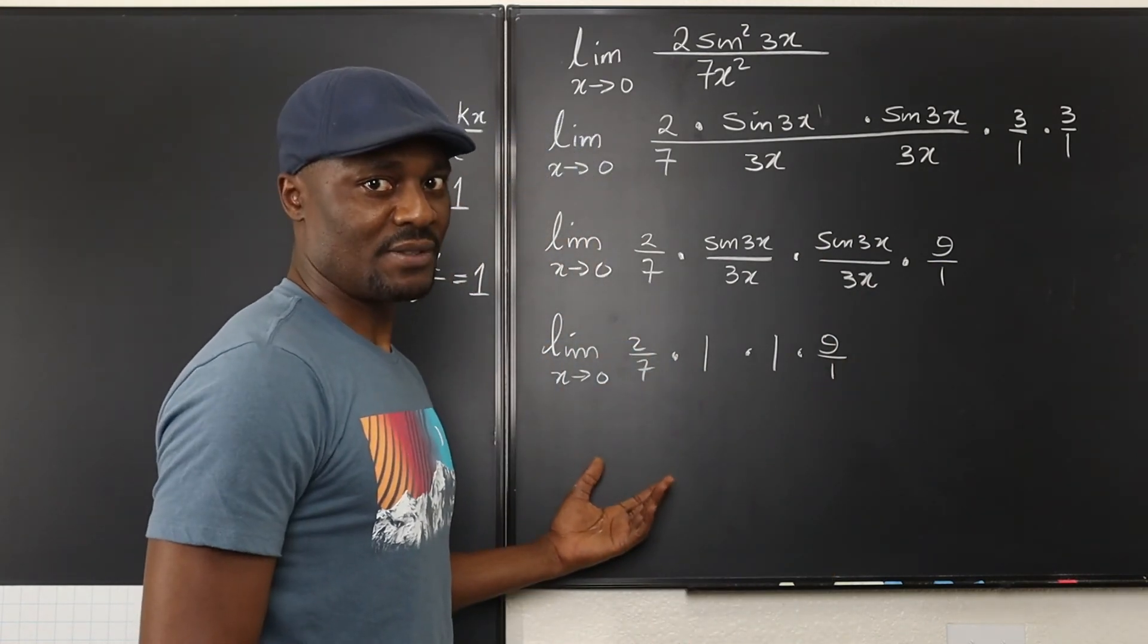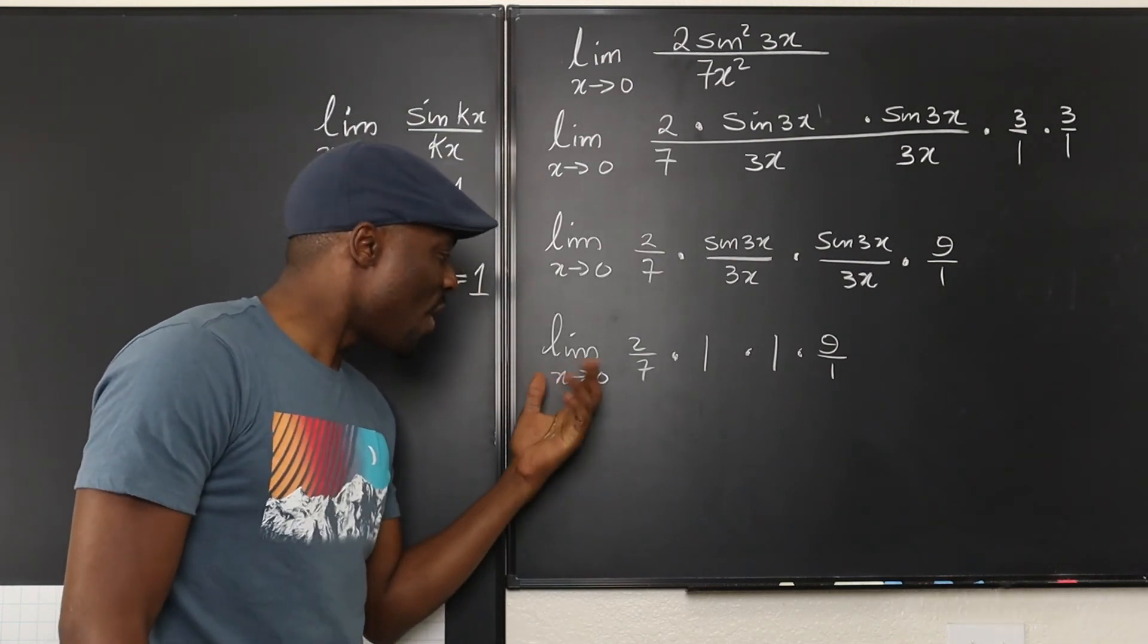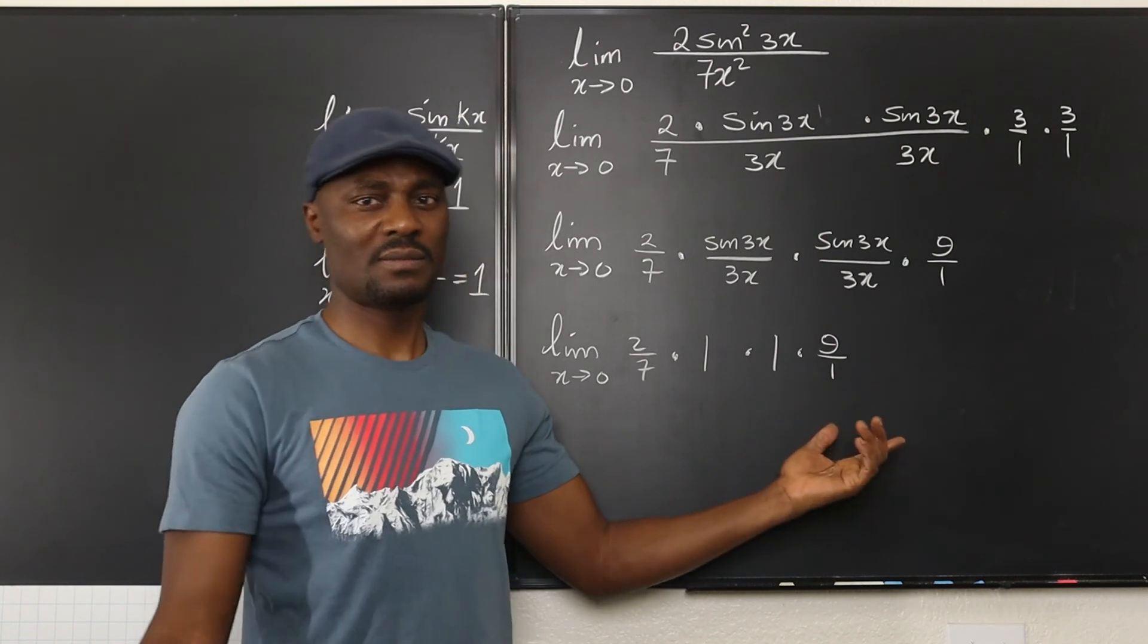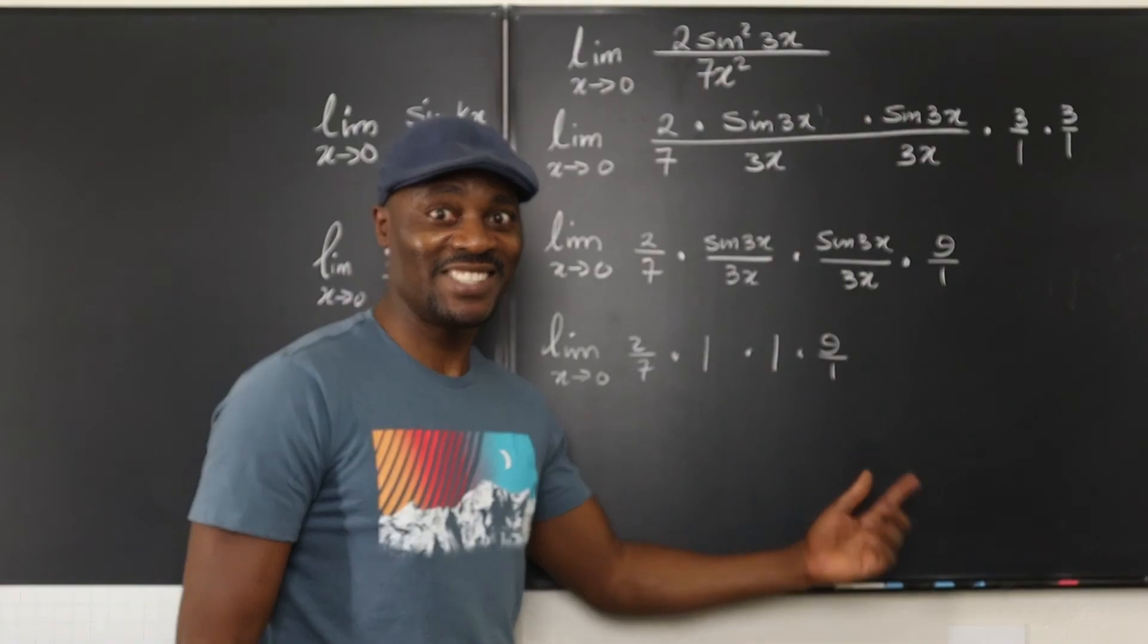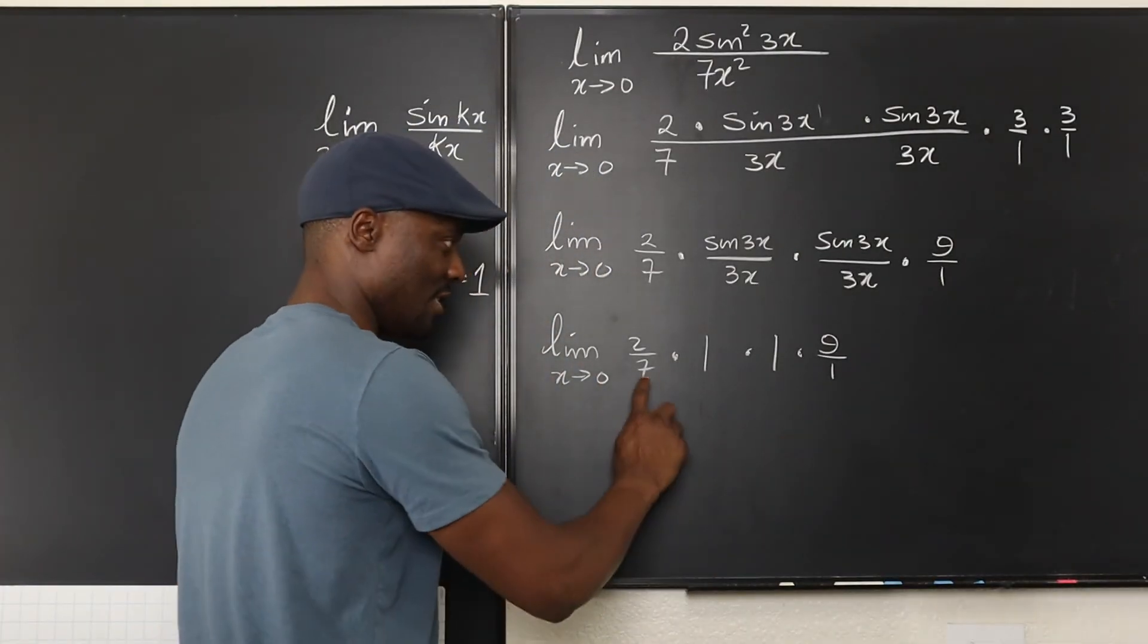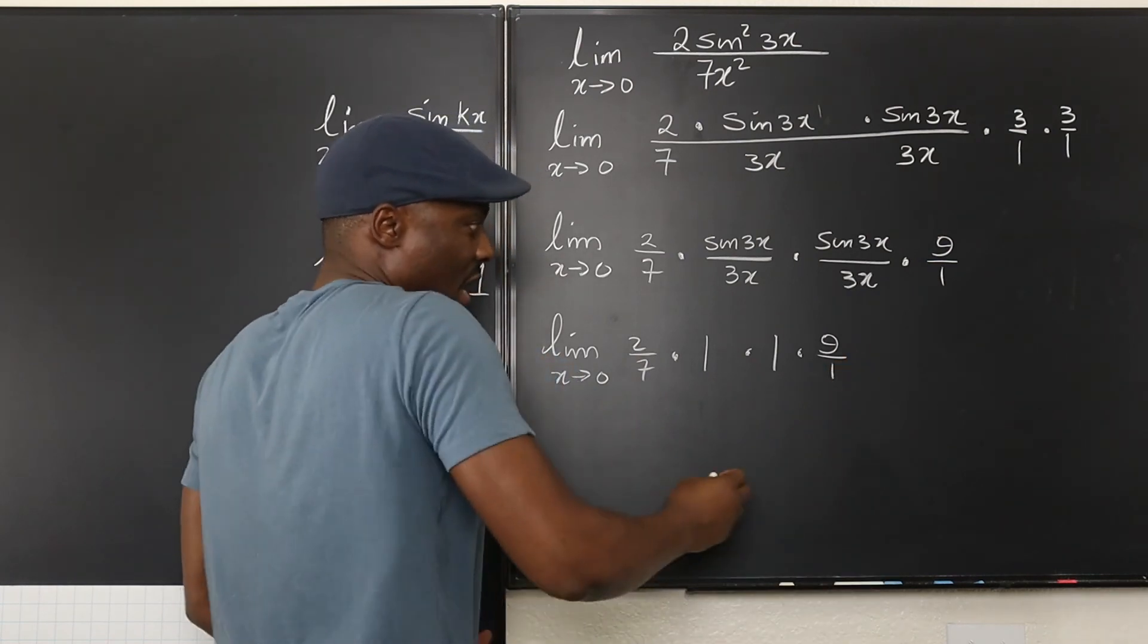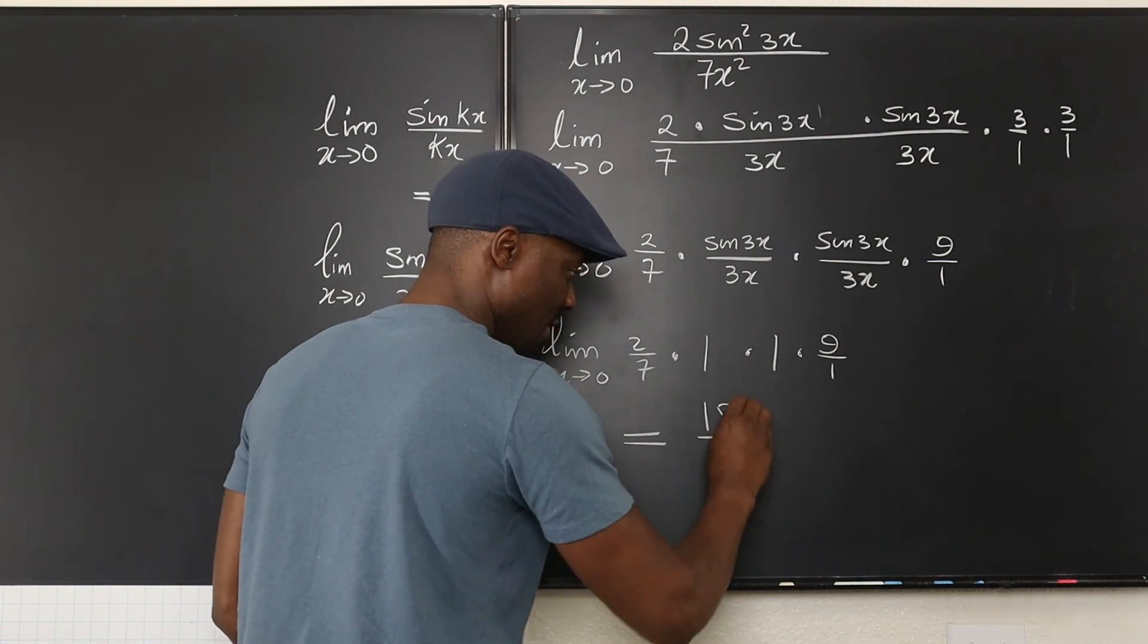There is no x left in the problem. So what is the value? What is the limit as x approaches 0 of a constant? Who cares where x is going? It is constant. It doesn't change. Therefore, my answer is just 2 over 7 times 1 times 1 times 9 over 7. And my answer is 18 over 7.